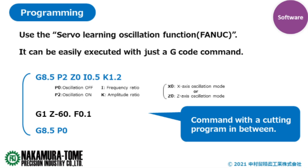It can be commanded with a very simple G code — oscillation cutting can be commanded with only two lines of code. You can choose whether to oscillate on the X-axis or Z-axis. The frequency multiplier i is the value for how often we want to add the oscillation, and the amplitude multiplier k is the value for the range of oscillation.